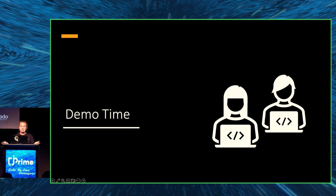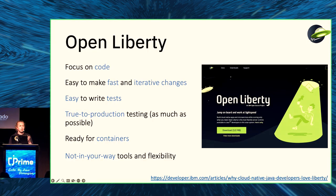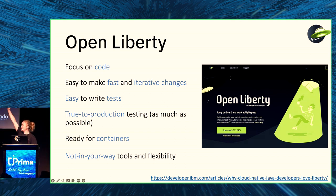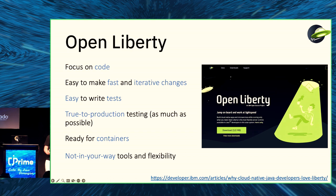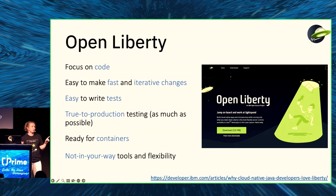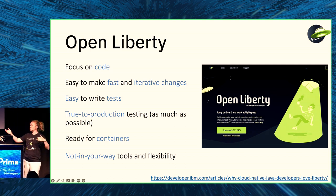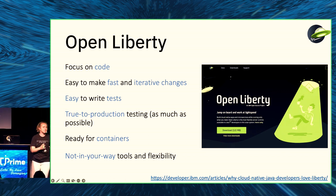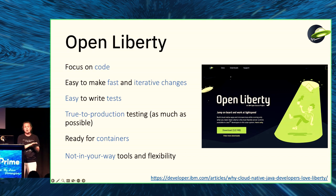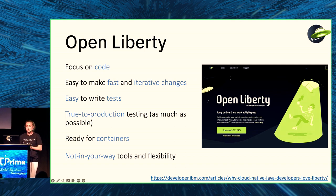Demo time! For this demo I'm using Open Liberty, an open source cloud native runtime. Open Liberty is the open-sourced version of IBM's Liberty, which was created in 2014 as a more modular, cloud native runtime to replace the clunky WebSphere application server. It was open sourced in 2017. It focuses on code, enables fast iterative changes using dev mode — similar to Quarkus Hot Reload — automatically picking up code changes without tearing down the whole application.